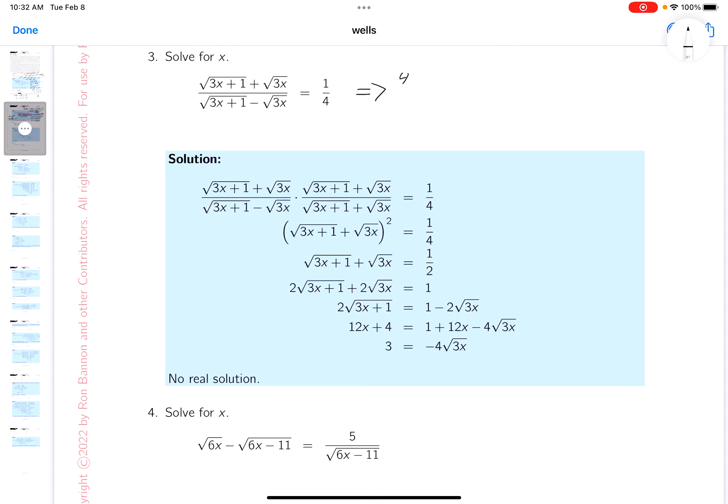Regardless, I get this over here. And then when you get to the right side, you would get root 3x plus 1 minus the root of 3x.